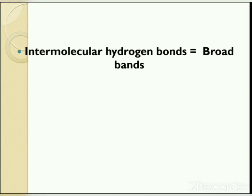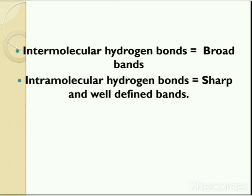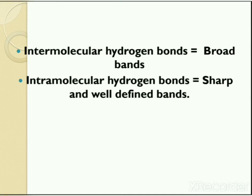Intermolecular hydrogen bonds give rise to broad bands, while intramolecular hydrogen bonds give sharp and well-defined bands. The inter- and intramolecular hydrogen bonding can be distinguished by dilution. Intramolecular hydrogen bonding remains unaffected on dilution, so the absorption bands also remain unaffected. Whereas intermolecular bonds are broken on dilution, resulting in a decrease in the bonded OH absorption.